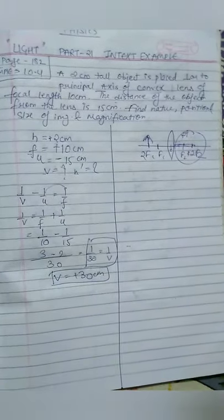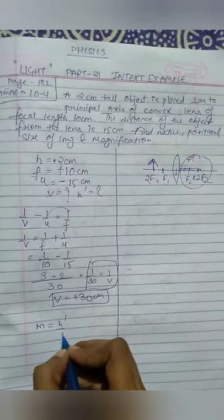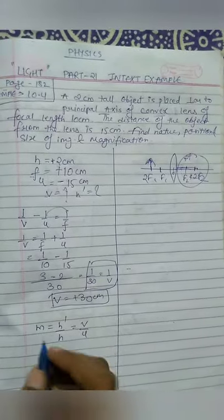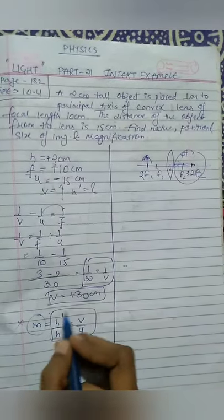Now we have to find h'. We have to take magnification formula: h' upon h and v upon u. In the case of lens and mirror we use this because we don't have magnification directly, so we have to use these two relations.